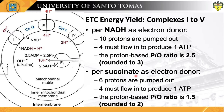Modern biochemists and academicians now use the P/O values of 2.5 and 1.5, but the values 3.0 and 2.0 are still common in the biochemical literature.